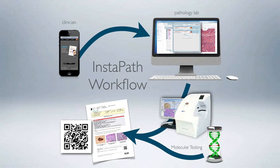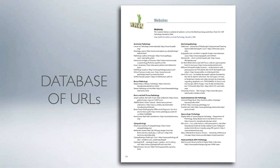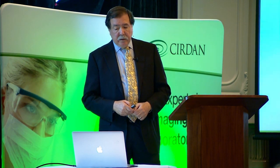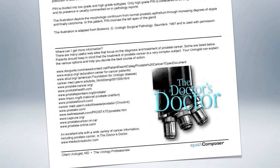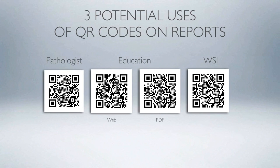Another thing to consider adding is references. Clinicians always want to know the latest documentation, so we've added a database of URLs to our reports. Patients want to look things up online, so we provide a list of vetted URLs they can be directed to in order to learn about their disease. We've also added QR codes in some reports — we see three potential uses in pathology: promotion, education, and whole slide imaging.